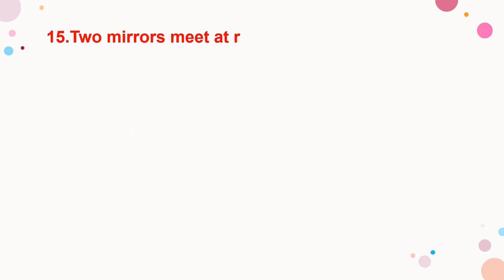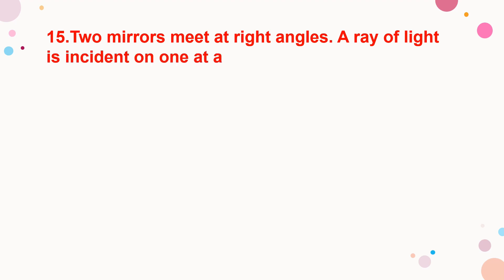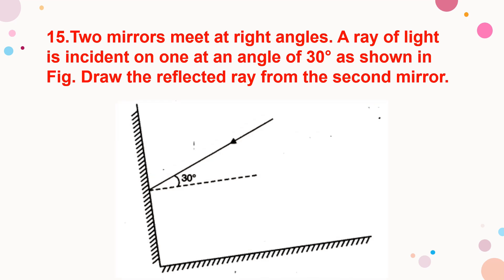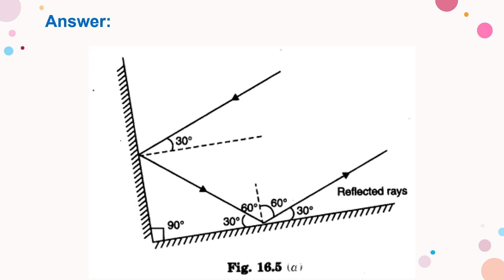Two mirrors meet at right angles. A ray of light is incident on one at an angle of 30 degrees as shown in the figure. Draw the reflected ray from the second mirror. One ray of light is incident at an angle of 30 degrees. We have to draw the reflected ray from the second mirror.